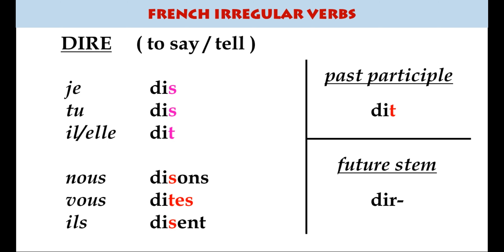Dire means to say or to tell: je dis, tu dis, il dit, nous disons, vous dites, ils disent. Interestingly, vous dites doesn't use the usual ez ending — it's just a silent es. This is one of only three verbs in French that doesn't take ez in the vous form. You'll hear it as dites-moi — tell me — not with an ez.